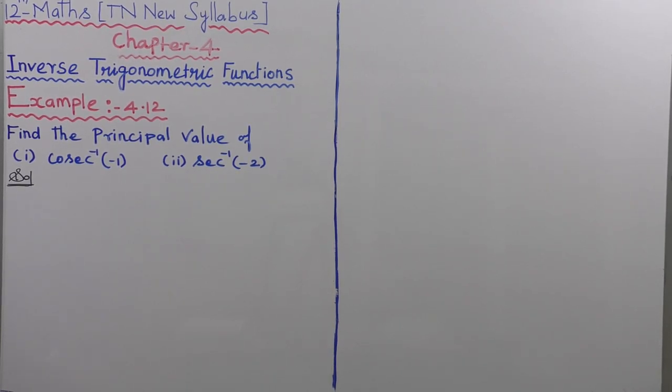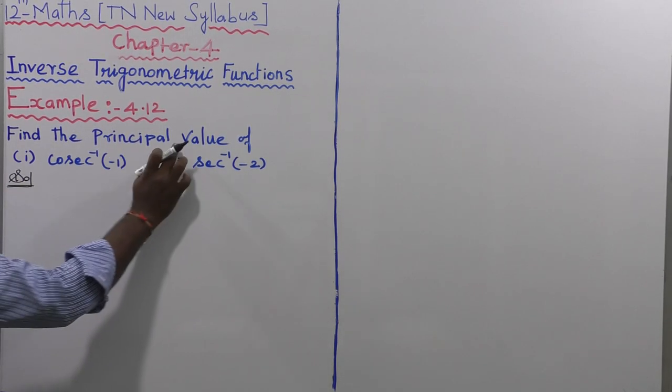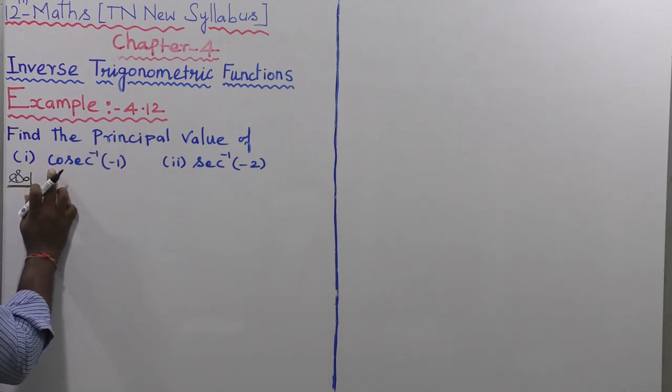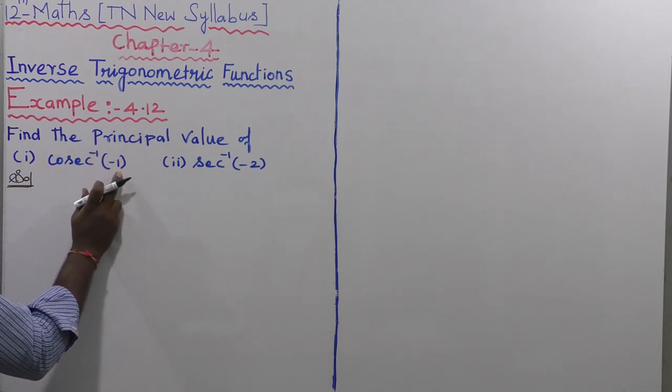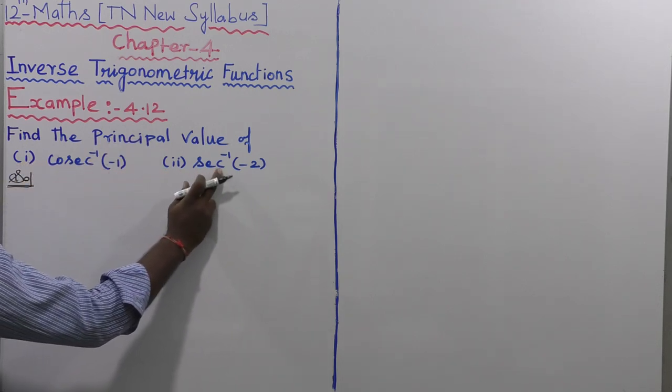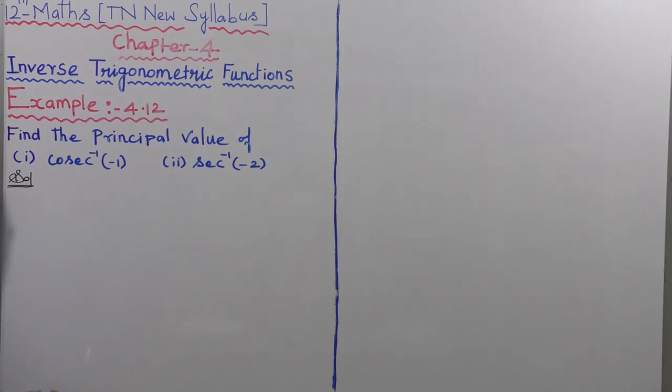Example 4.12: Find the principal value of the first subdivision, cosecant inverse of minus 1; and the second subdivision, secant inverse of minus 2.